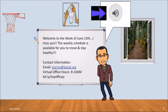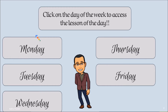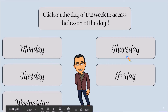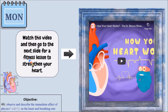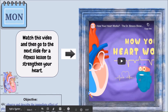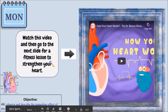I embedded this on the particular screen. Moreover, the student can click on the day of the week to access the lesson for the day — Monday, Tuesday, Wednesday, Thursday, and Friday within the Google Slides. The first lesson is to observe and describe the immediate effect of physical activity on the heart, breathing rate, and perspiration.